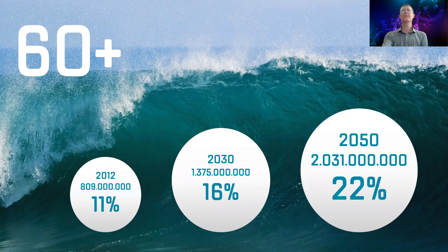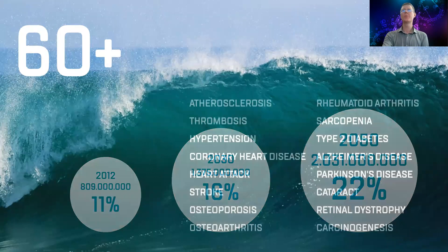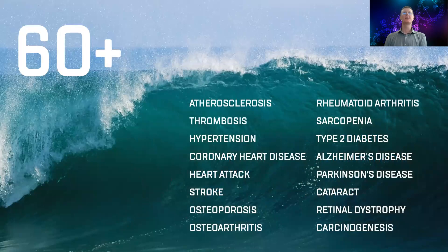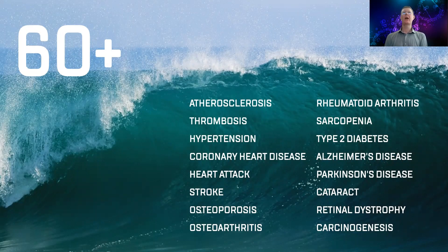We have a need to develop approaches to improve the working capacity and quality of life of elderly people. Because aging is the main risk factor for all chronic socially significant diseases that impair the working capacity and quality of life, such as cardiovascular, type 2 diabetes, tumor, and neurodegenerative diseases. Global demographic and macroeconomic implications are coming soon — the birth rate will decrease.